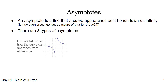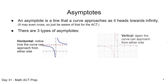We have three types of asymptotes. First, we have a horizontal asymptote — notice in this graph how both curves can approach from either side of the horizontal. Then we also have a vertical asymptote, where the curve can approach from either side. And our third case is an oblique or slant asymptote, which looks a bit different. We're going to go into detail about each one of these now.